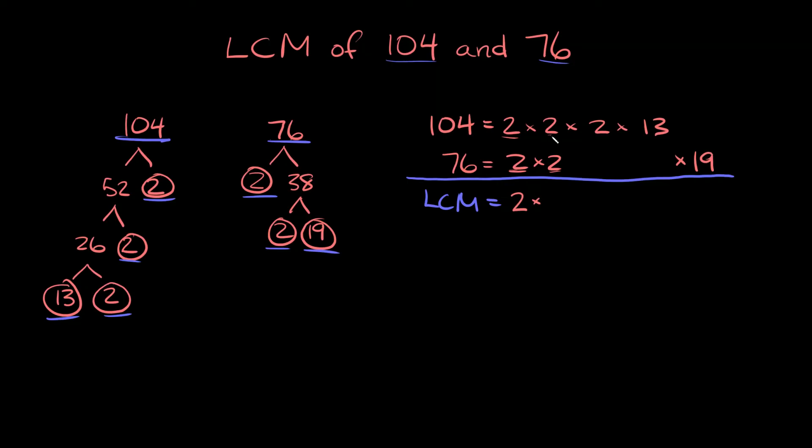Now we're going to multiply that by, we have a 2 and a 2, but again we're only going to write it down once. Here we just have a single 2 by itself, so we're going to bring that single 2 by itself. Here we have a single 13, so we're bringing that by itself also. And this single 19, so also by itself. So the least common multiple of 104 and 76 is equal to 2 times 2 times 2 times 13 times 19.